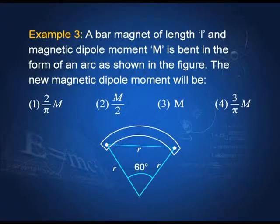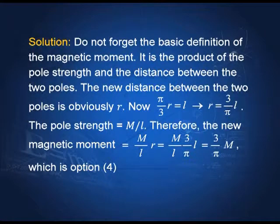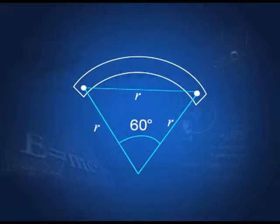Example 3: a bar magnet of length l and magnetic moment M is bent into the form of an arc such that the angle subtended is 60°. The magnetic moment is the pole strength times the distance between the two poles, regardless of shape. The new distance between the poles is r. Because the angle is 60° and both radii from the center are equal to r, the triangle formed is equilateral, so the distance between poles equals r.